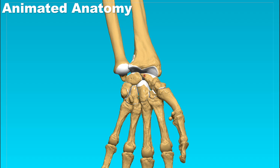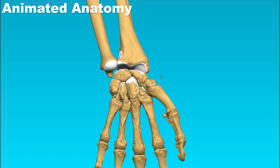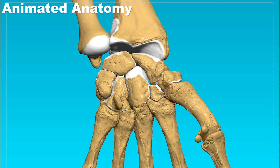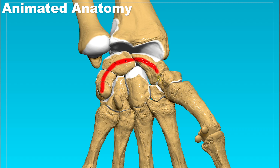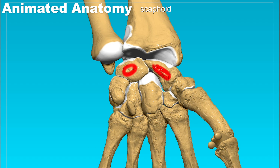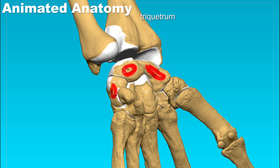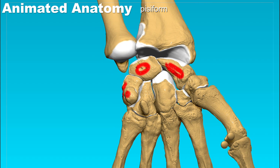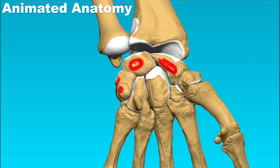Those bones that you see here are the carpal bones. Right away we should point out that these carpal bones consist of the proximal row and the distal row. The proximal row is created by the scaphoid, lunate, triquetrum, and the pisiform bone. The distal row is created by the hamate, the capitate, trapezoid, and trapezium bone.